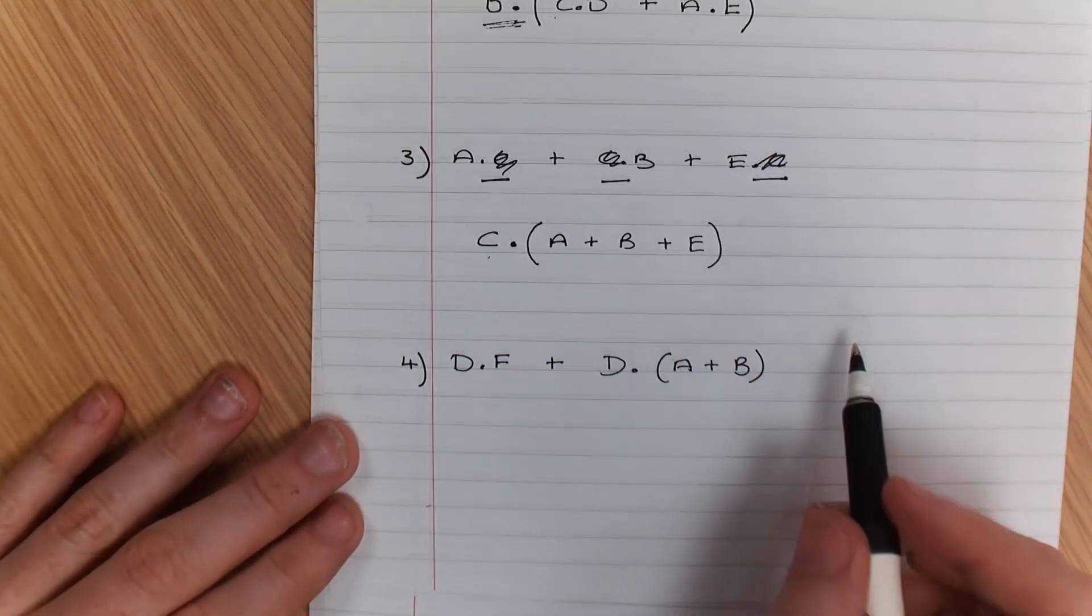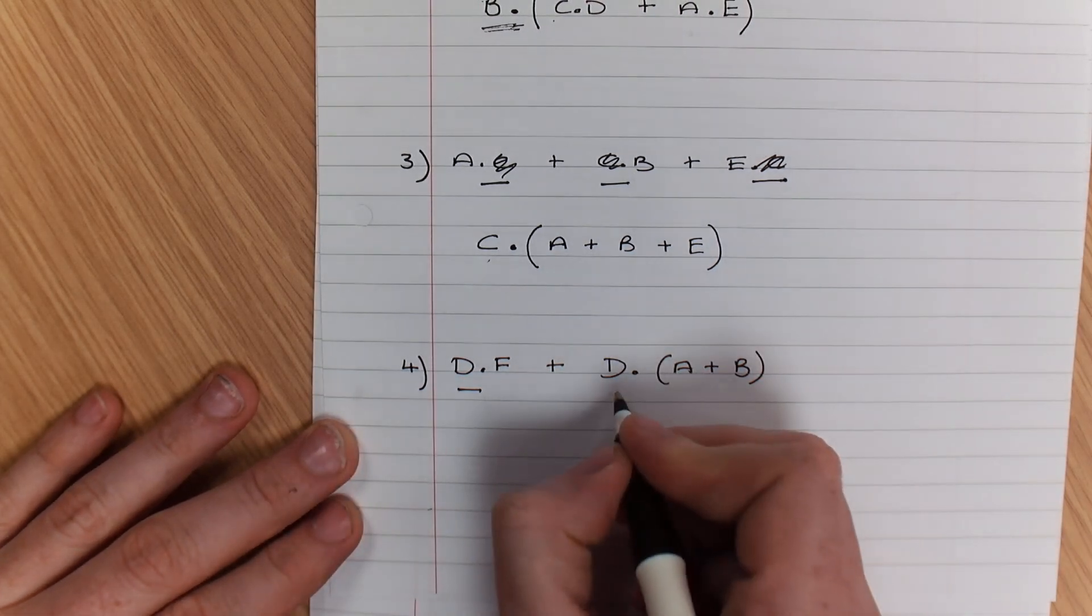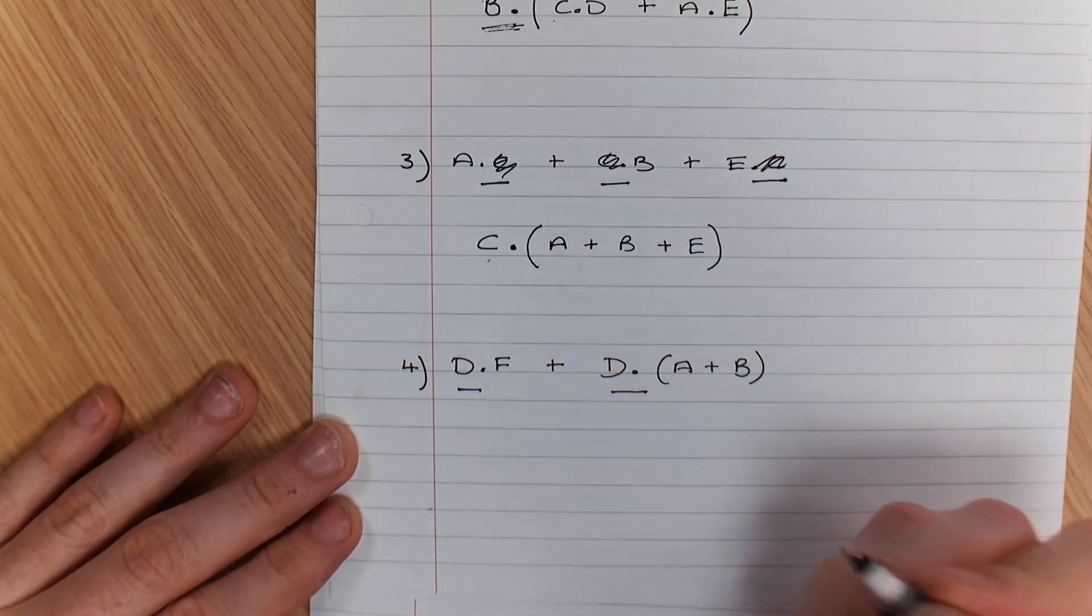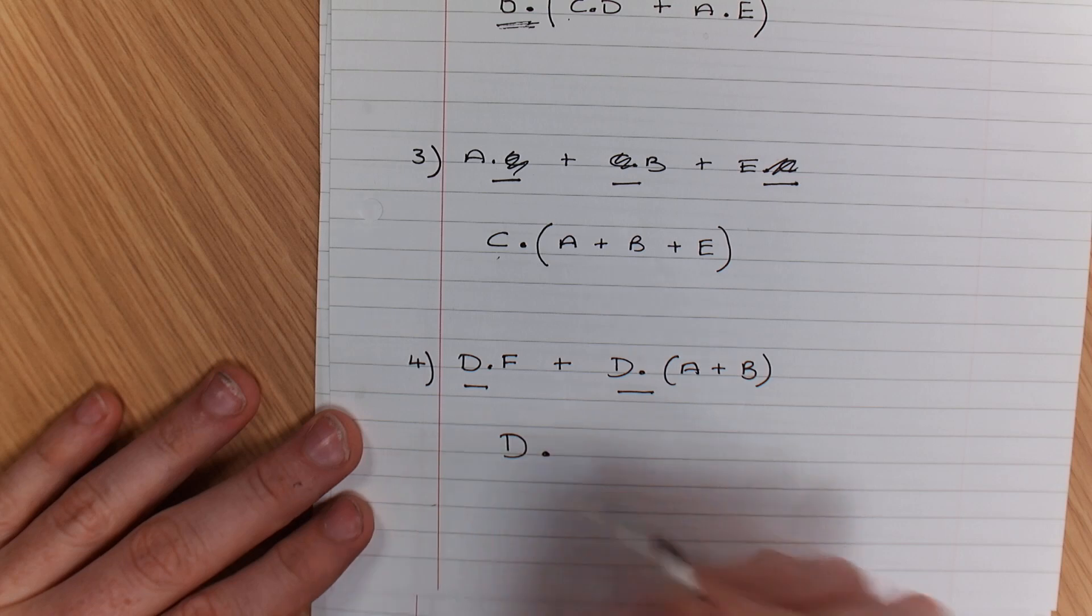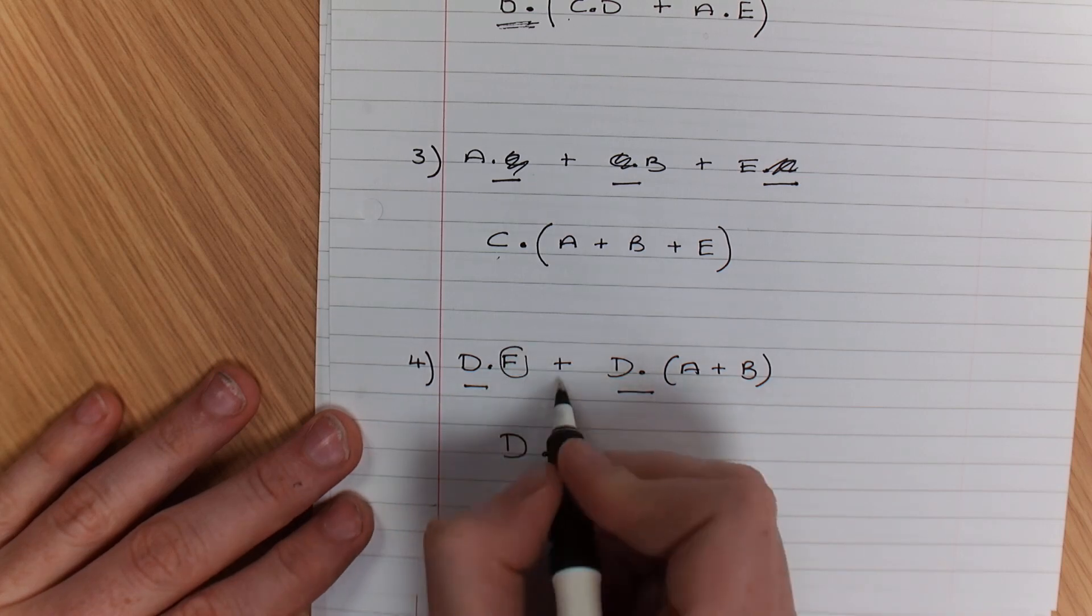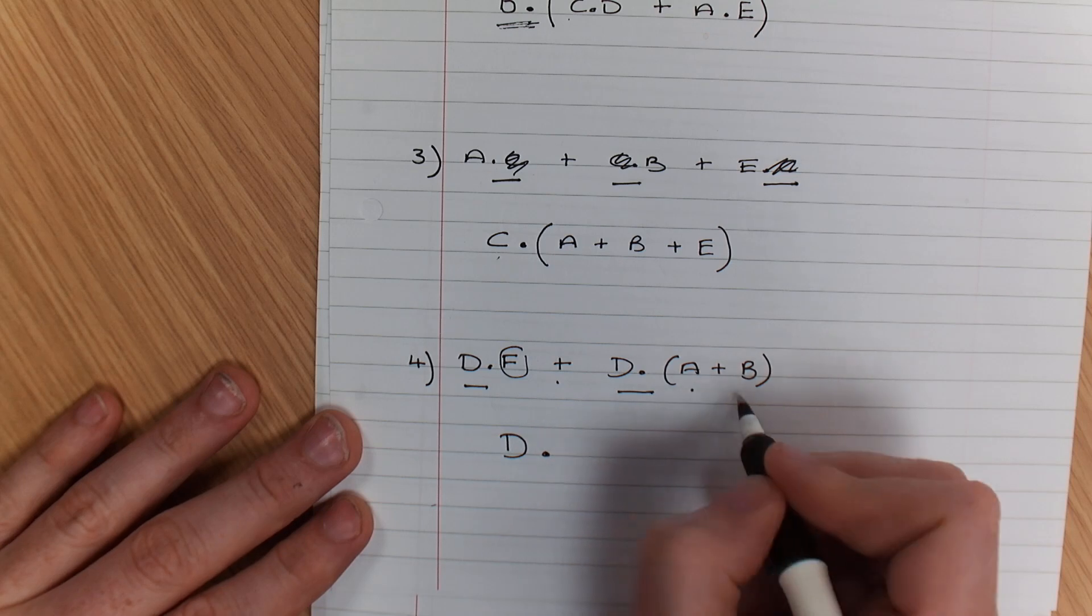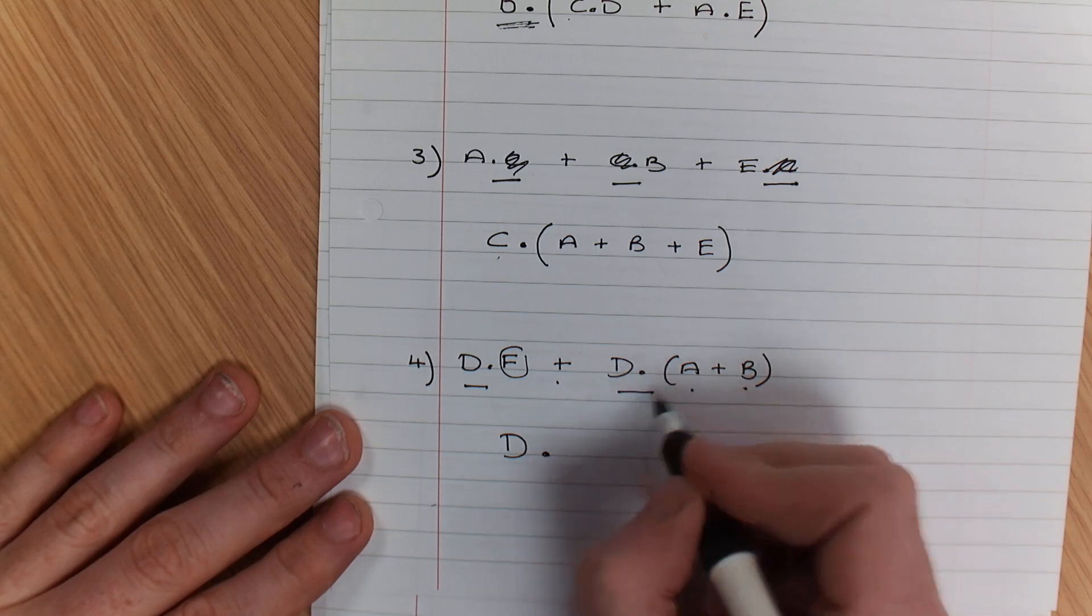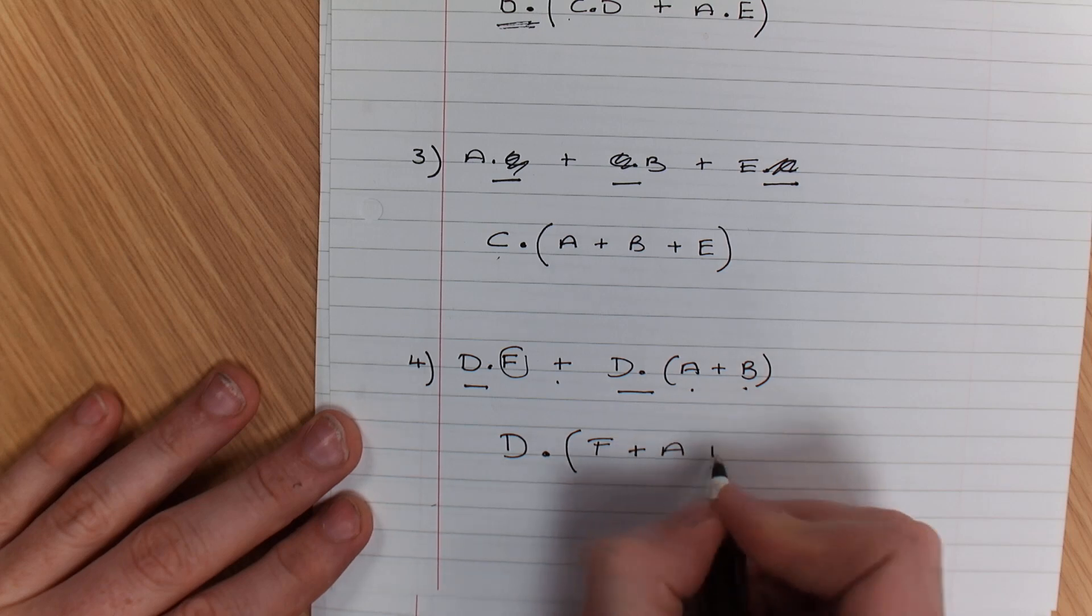Got one left over from these expressions here. So the common factor again is D. So what we're going to have here is D, but what's left over is F or (A and B). So what we're going to end up with here is F or (A plus B).